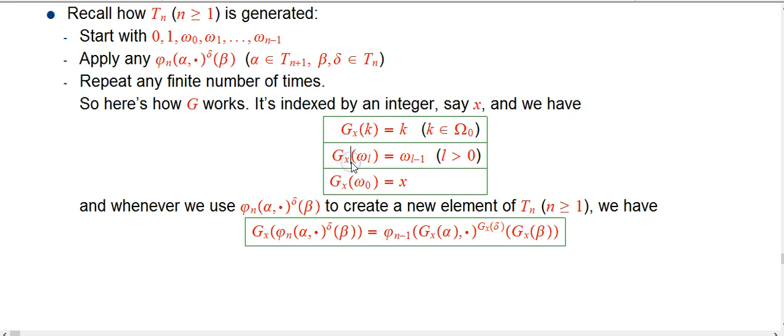So the collapse, and again, this is independent of x so far. So the collapse of omega 1 is omega 0, collapse of omega 2 is omega 1, very simple.